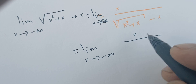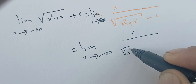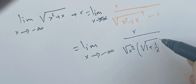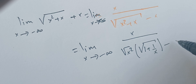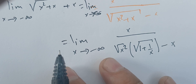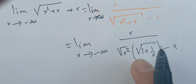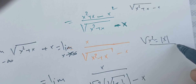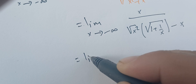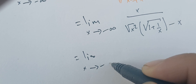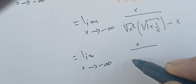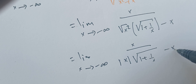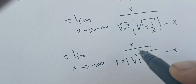One key step is factoring. The limit as x goes to minus infinity of x over the square root of x squared times the quantity one plus one over x, minus x. The square root of x squared is the absolute value of x, so this becomes the limit as x goes to minus infinity of x over the absolute value of x times the square root of one plus one over x, minus x.